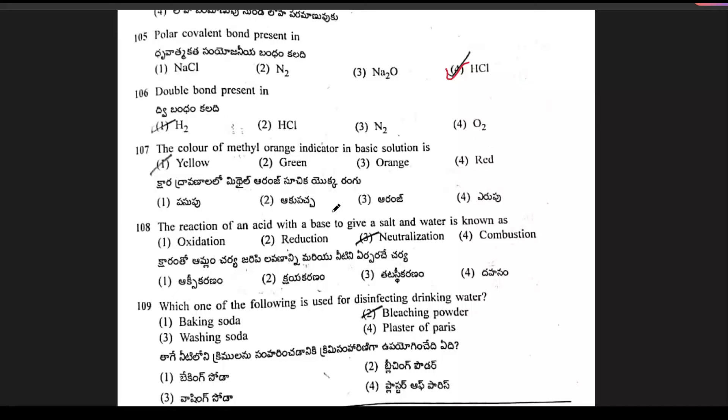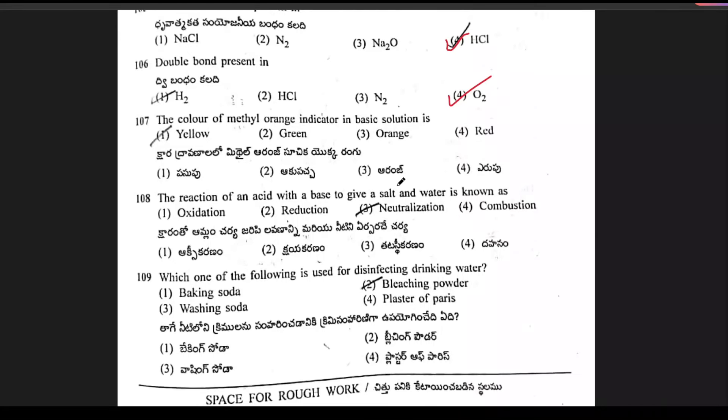Double bond present in? In the molecule, double bond is in O2. Option 4 is the right answer. The color of methyl orange indicator in basic solution is yellow. Option 1 is the right answer. Next, the reaction of an acid with base to give a salt and water is known as neutralization. That is the right answer.